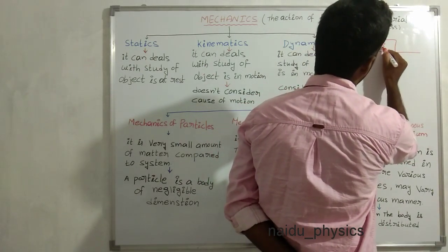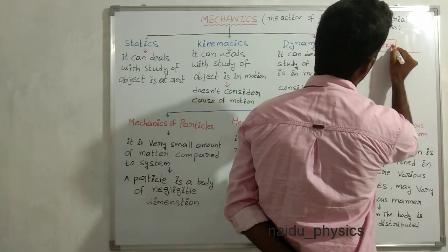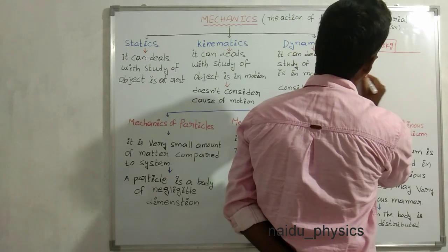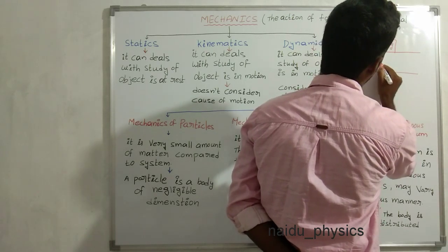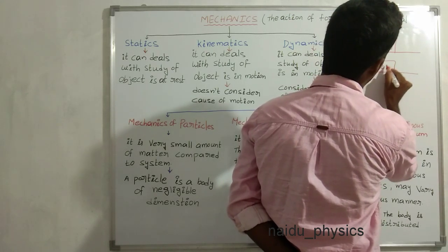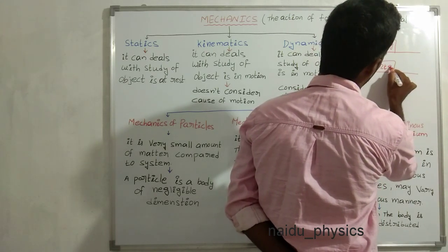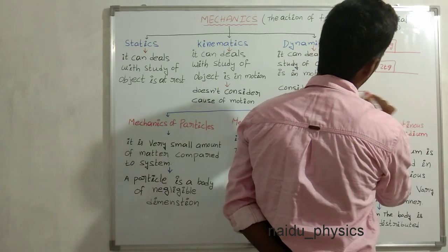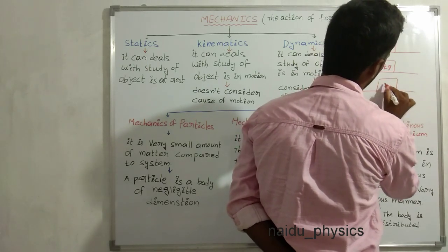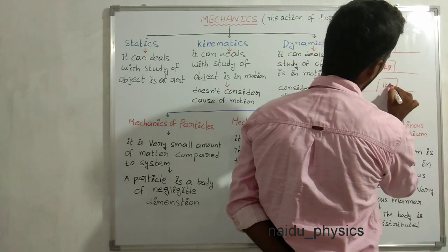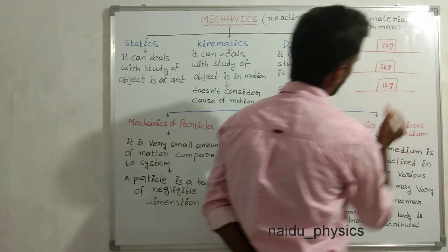One is a 3 kg mass, another one is a 2 kg mass, and a 1 kg mass put on the floor.